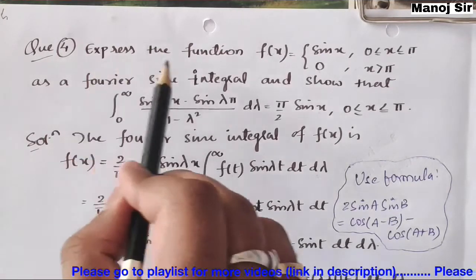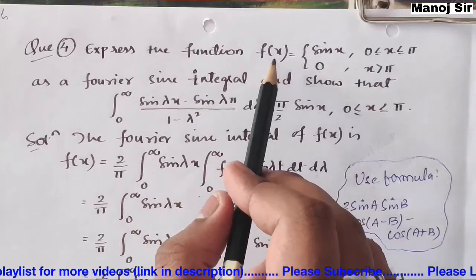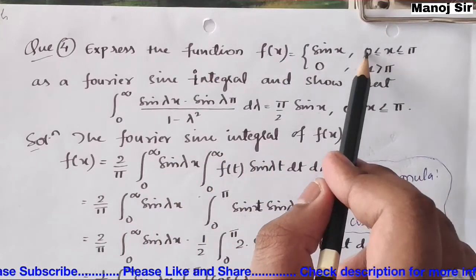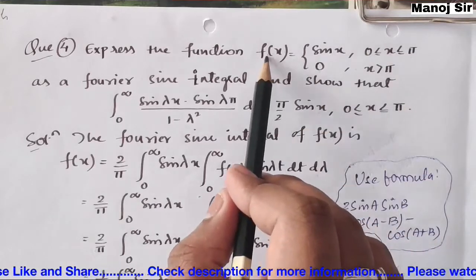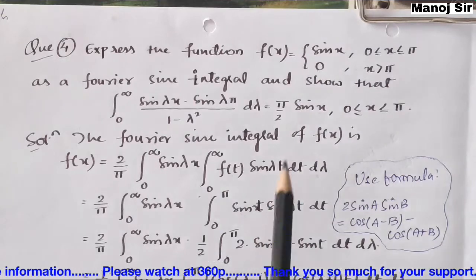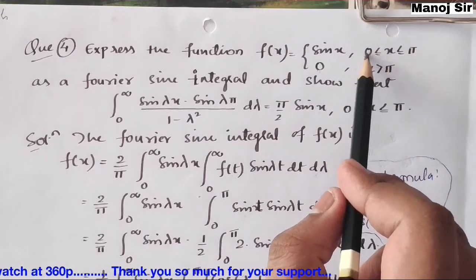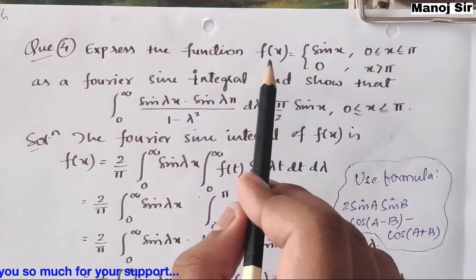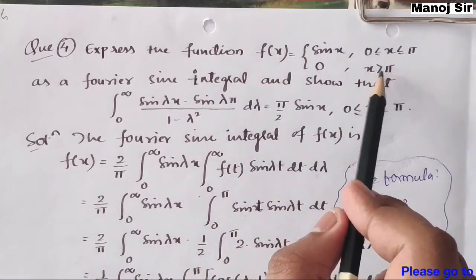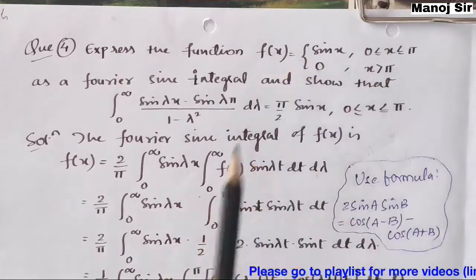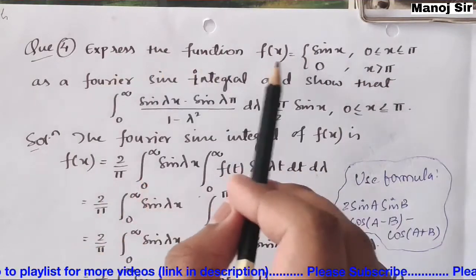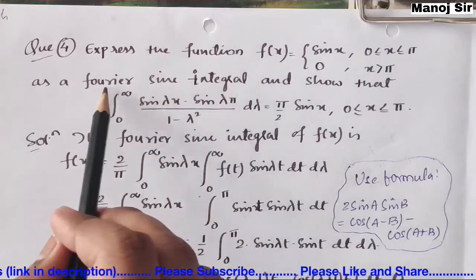The question says: express the function f(x) where f(x) = sin(x) when x is from 0 to π, and f(x) = 0 when x is greater than π. So when x is from 0 to π the function is sin(x), but when x is greater than π the function becomes 0.